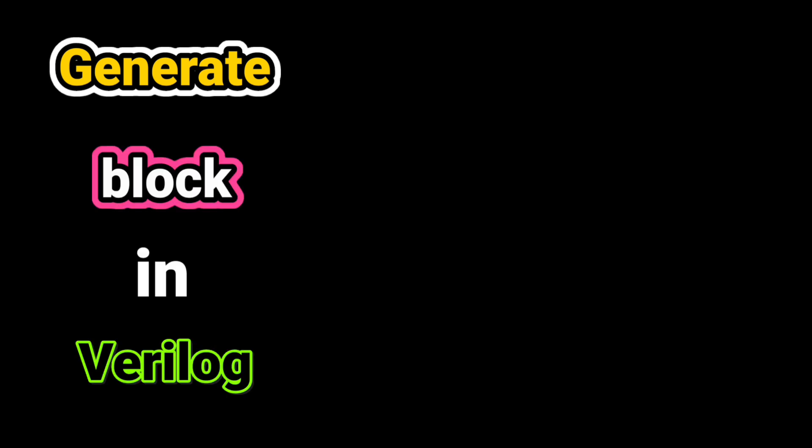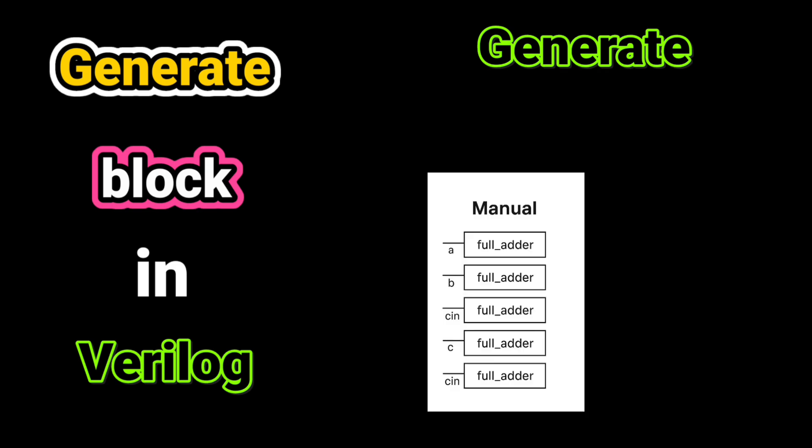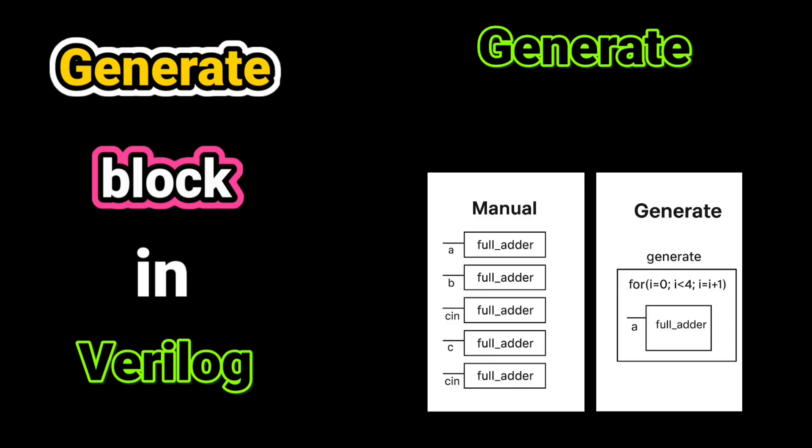In Verilog, generate blocks are used to build repetitive or conditional hardware during elaboration, before simulation even starts. Why is generate important? If you need multiple copies of a module or logic, instead of writing it manually, you use generate. This makes code cleaner and parameterized.